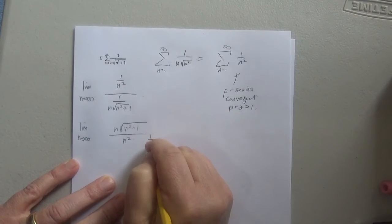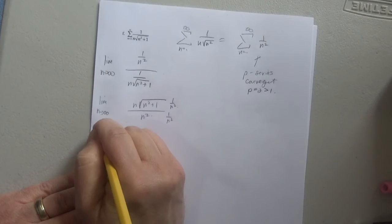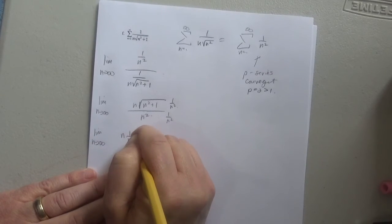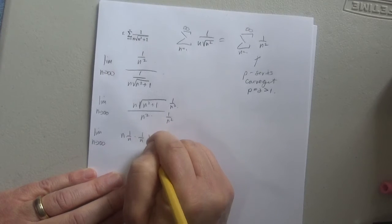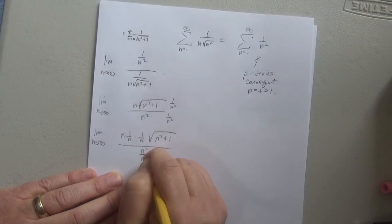I multiply top and bottom by 1 over n squared. So what happens here? I have the limit as n approaches infinity. This is n times 1 over n times 1 over n times n squared plus 1 all over n squared over n squared.